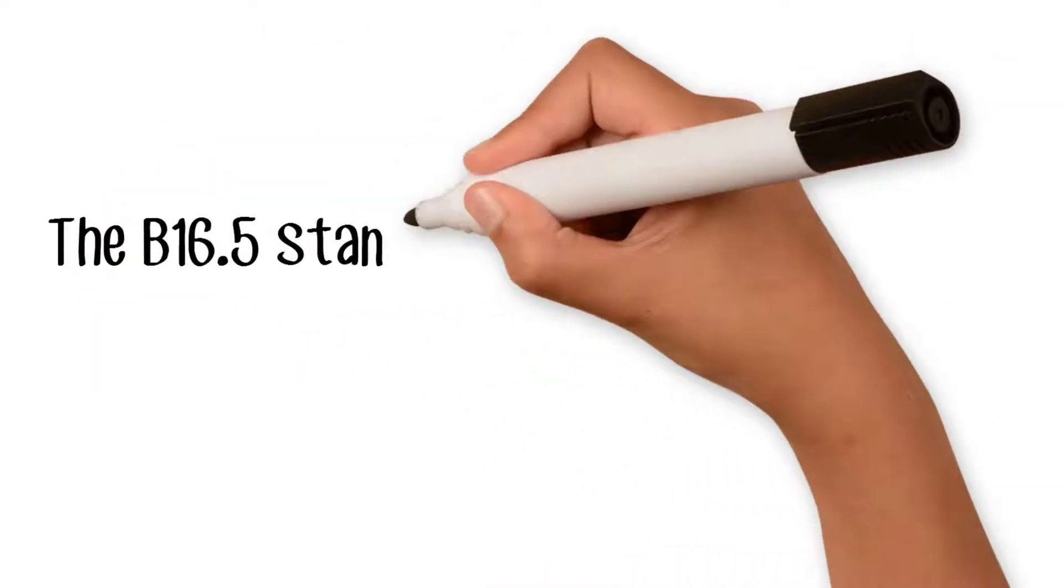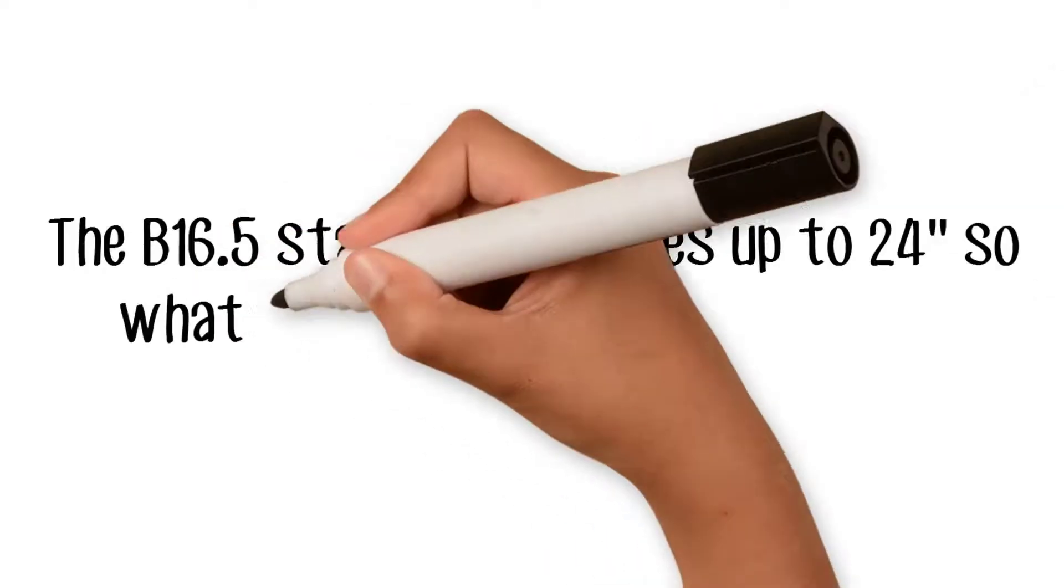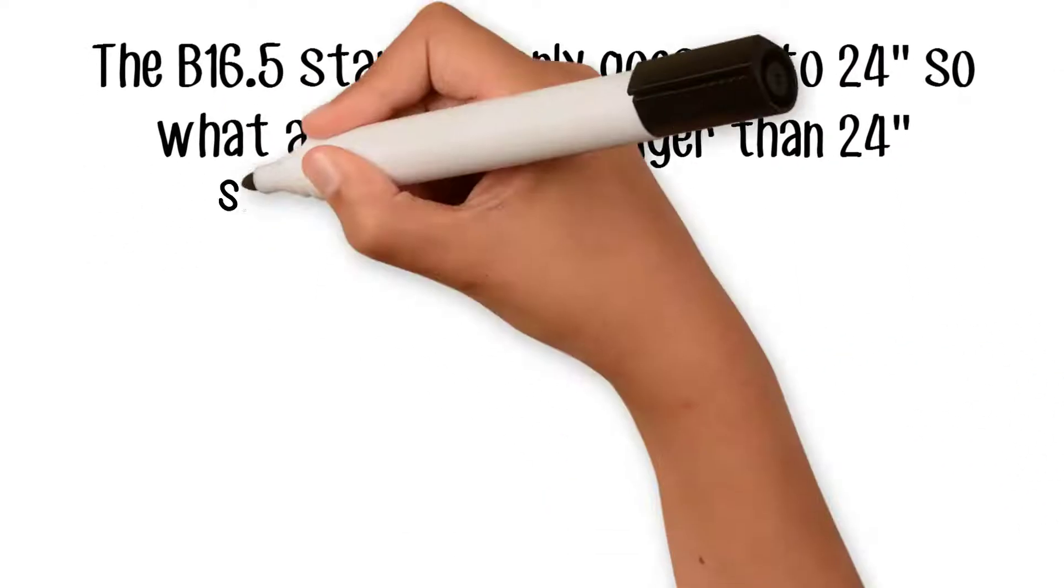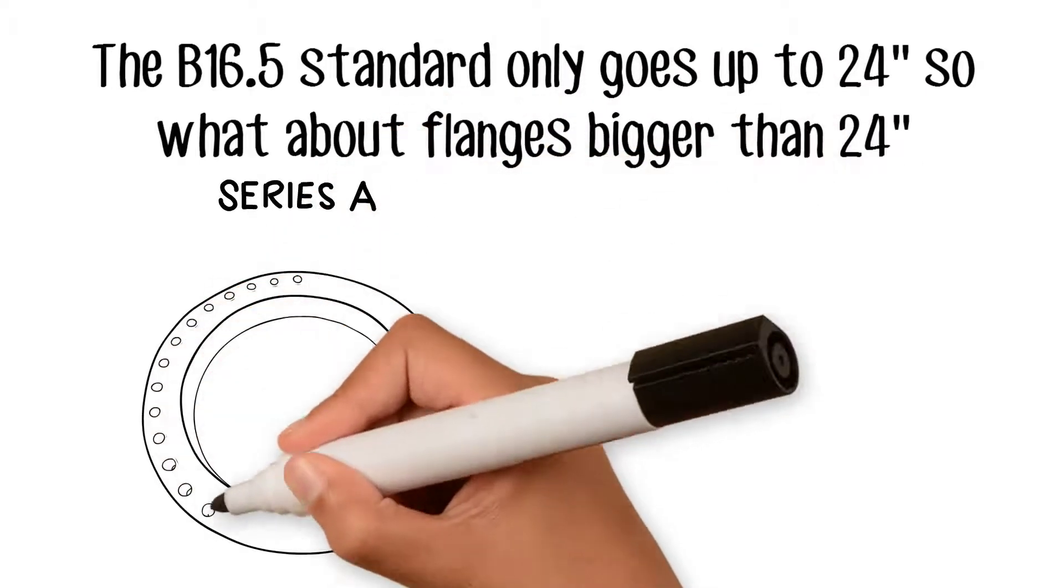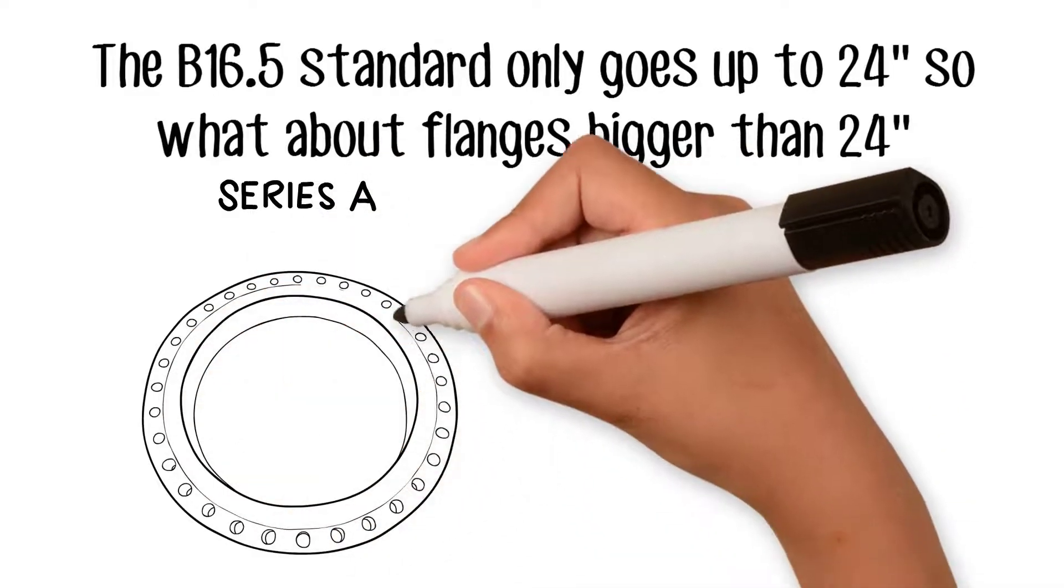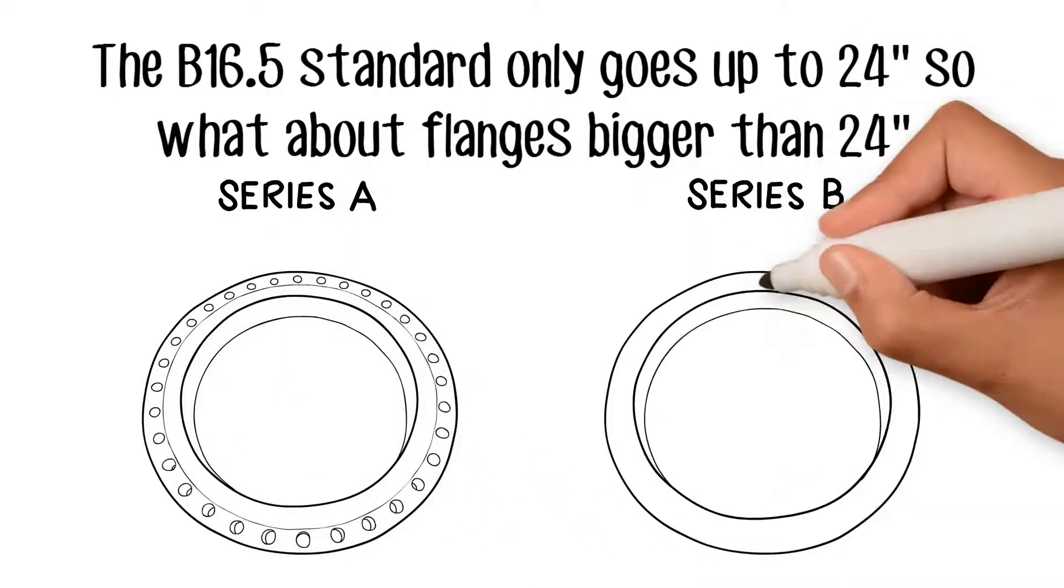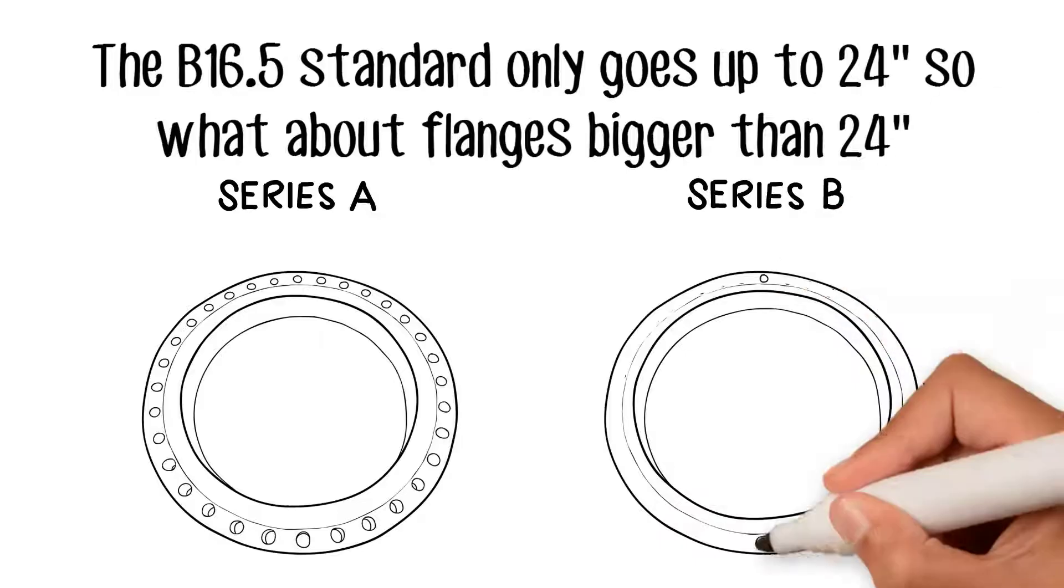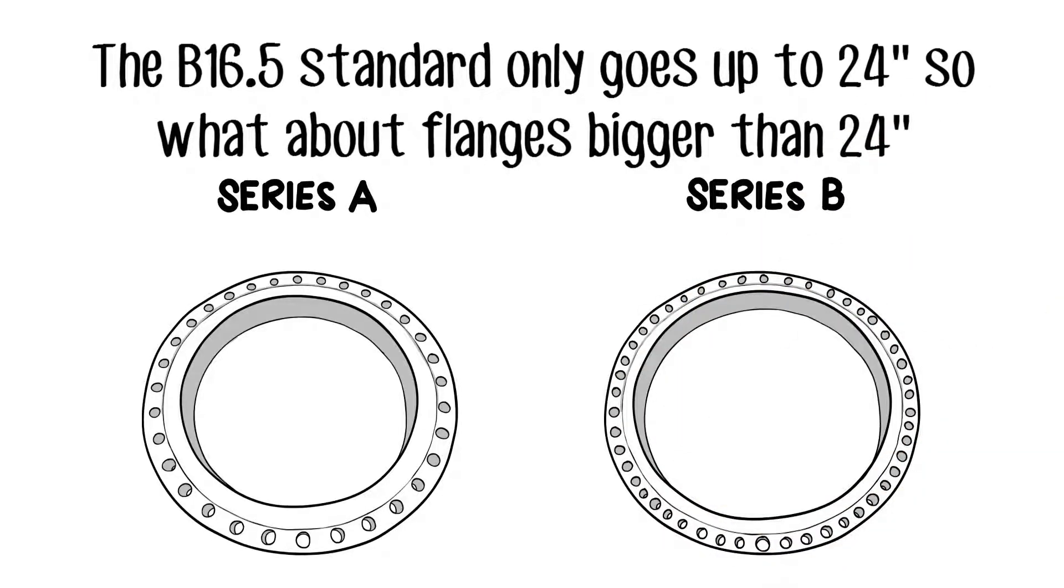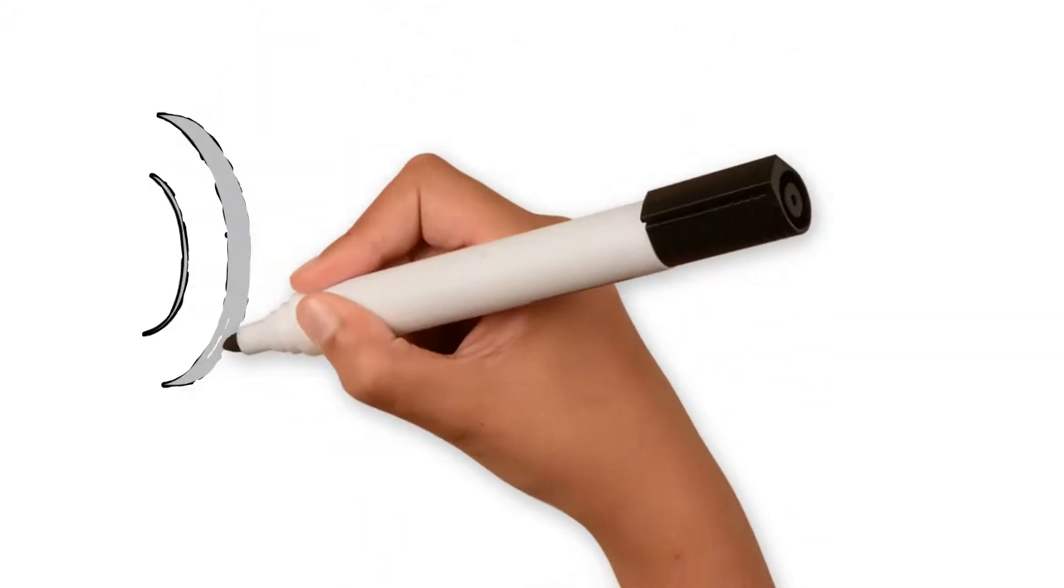The B16.5 standard only goes up to 24-inches, so what about flanges bigger than 24-inches? The standard ASME B16.47 covers large-diameter steel flanges from 26-inch nominal to 60-inch nominal pipe sizes. This standard is further divided into Series A and Series B flange for blind flange and weldneck flange.